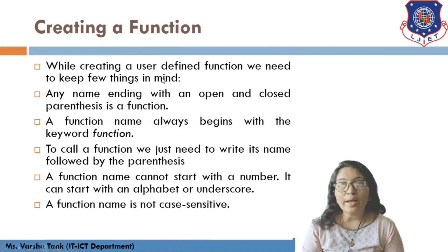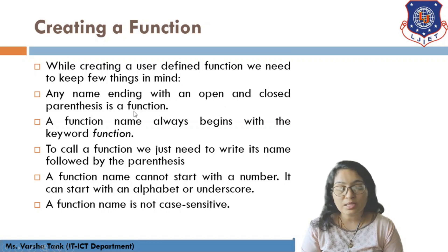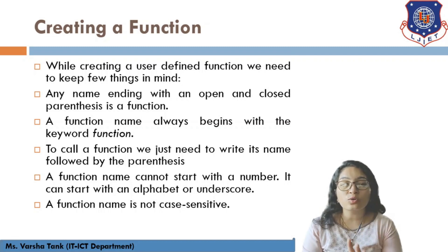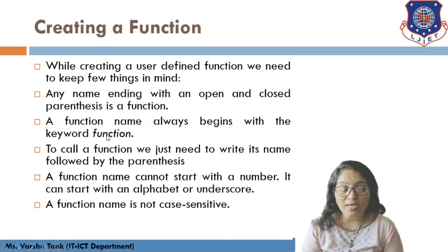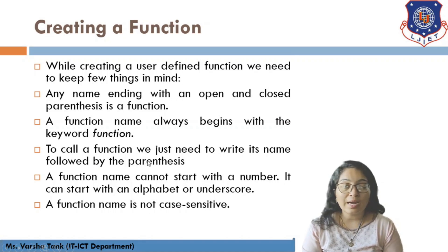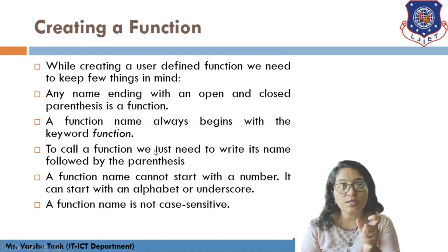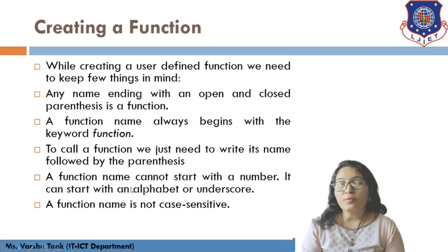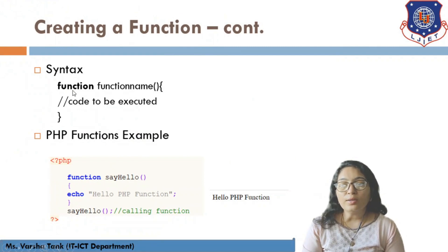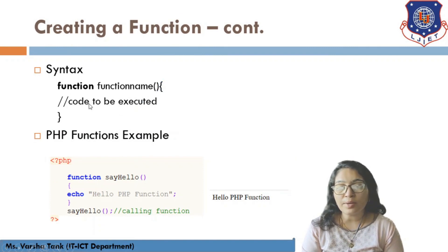Now, creating functions. While creating a user-defined function, keep a few things in mind: any name ending with open and close parentheses is a function. A function name always begins with the keyword 'function'. To call a function, just write its name followed by parentheses. A function name cannot start with a number — it can start with an alphabet or underscore. A function name is not case-sensitive. The code goes in between the curly braces.